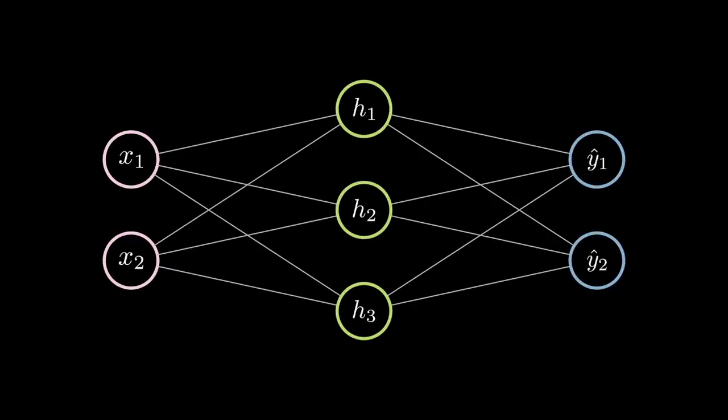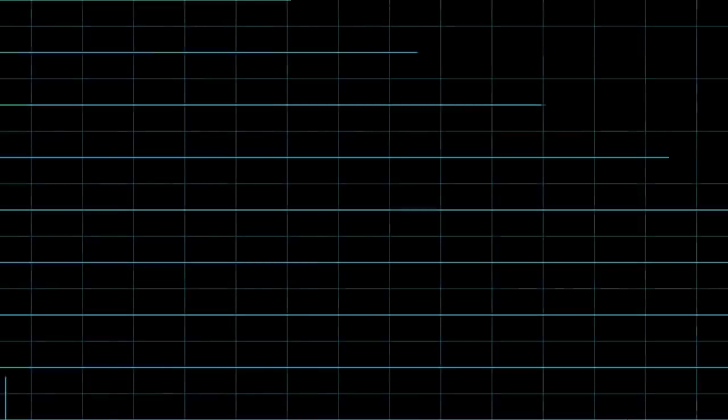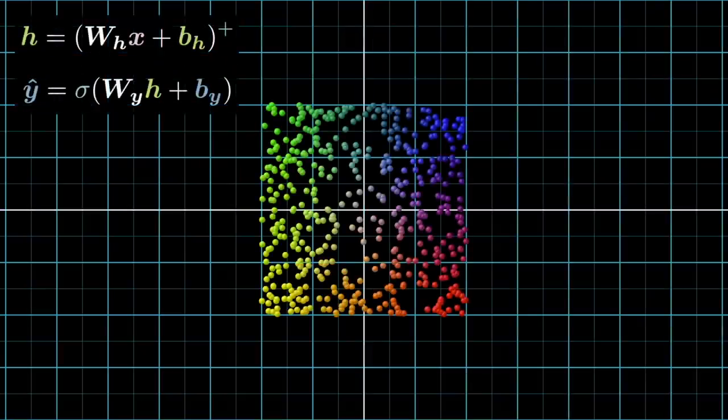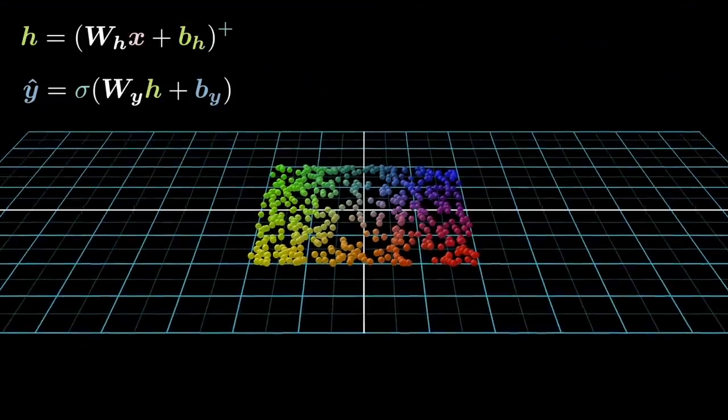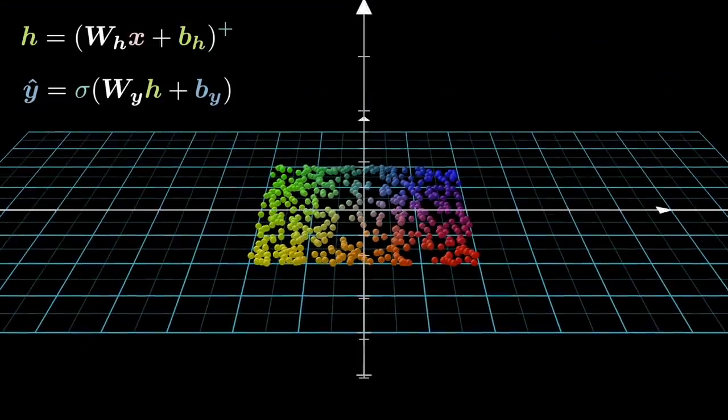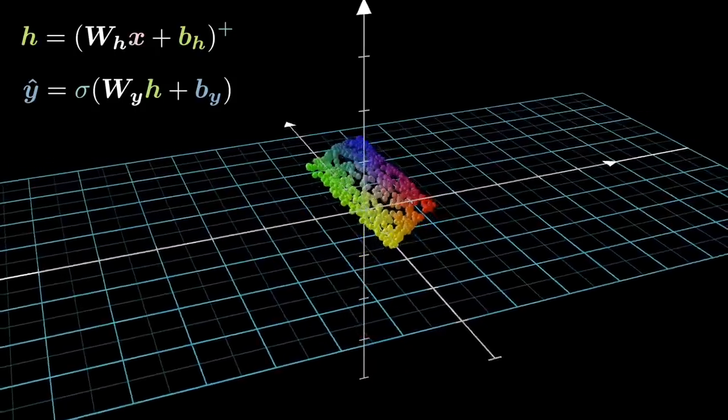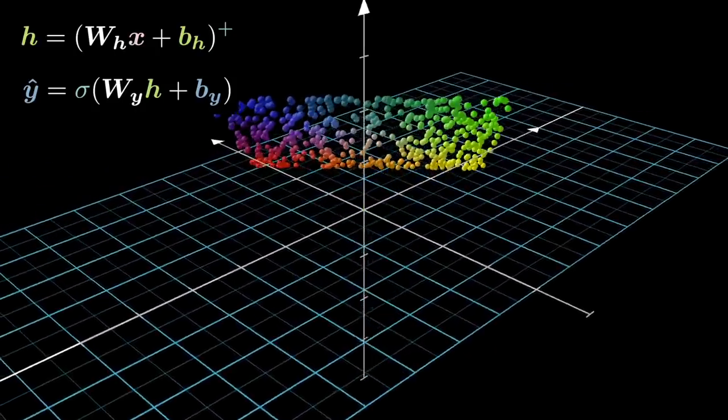We can play this linear transformation game in three dimensions too. Let's consider this neural network with two input neurons, a hidden layer with three neurons, and a final layer with two outputs. As before, the weights and biases are randomized. We start off in the 2D plane with a uniformly distributed square of points. But now instead of mapping from 2 to 2, we're mapping from 2 to 3. To do this, we need to rotate into the 3 dimensional space.